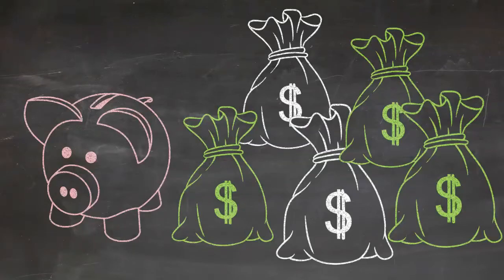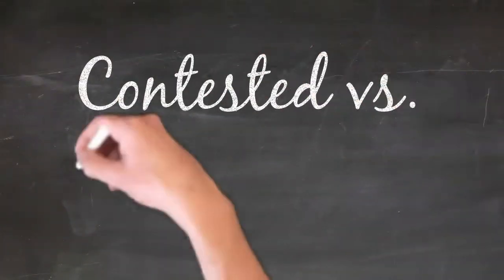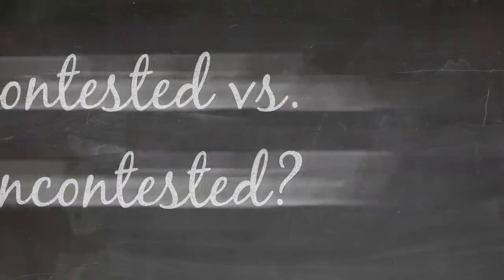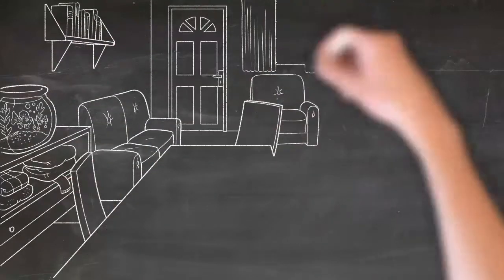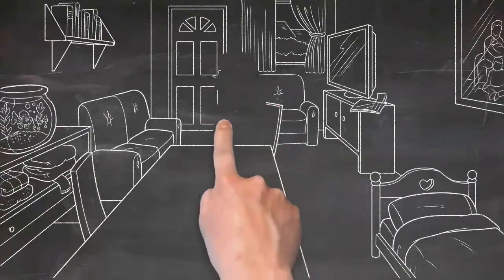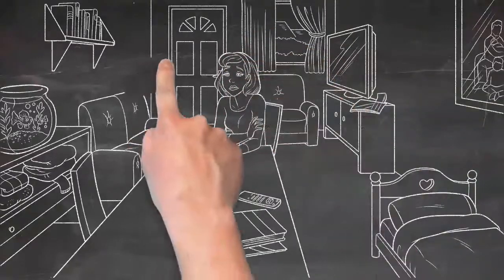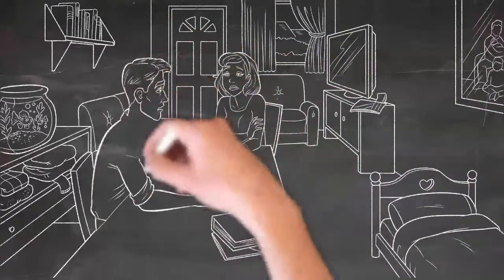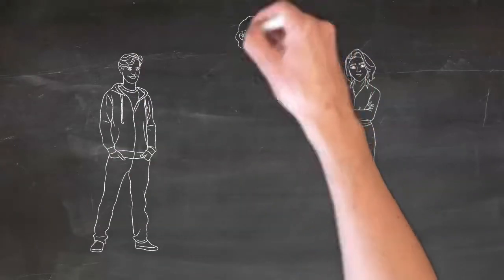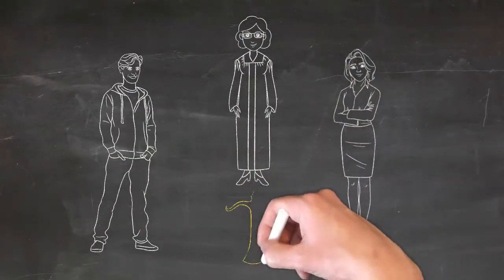But before we get into the details, it's probably worthwhile spending a minute to explain what the differences are between contested and uncontested divorces. In simple terms, an uncontested divorce is one in which you and your spouse work together to agree on the terms of your divorce and typically you both consult with the same attorney who should be unbiased and impartial.